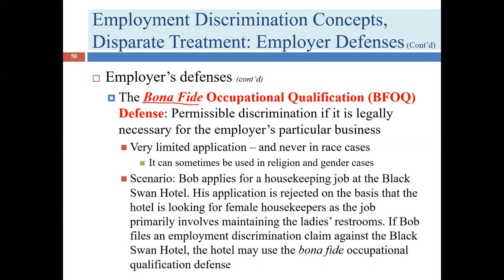Similarly, if a theater company wants to hire someone to play the role of Juliet, they're not going to hire a 70-year-old man. They probably also wouldn't hire someone who doesn't look Italian, since Juliet in the play is Italian — so they likely wouldn't hire someone with blonde hair and blue eyes, or someone ethnically Japanese or African. These are examples of BFOQs. As you can see, there are more than those examples, but not a ton more — the vast majority of jobs do not allow for a BFOQ.